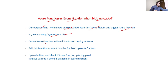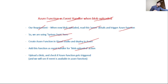In this video, we will create an Azure Function in Visual Studio and deploy it to Azure. Then we will add this Azure Function as an event handler for the blob uploaded action — meaning when a new blob is uploaded, this Azure Function will get triggered and the blob upload event information will be available in it. Finally, we will upload a blob and verify that the function gets triggered and that the event information is available.